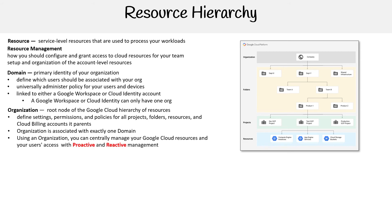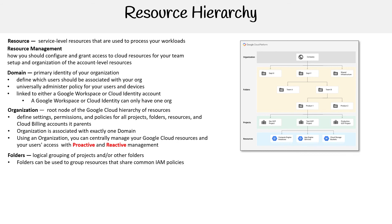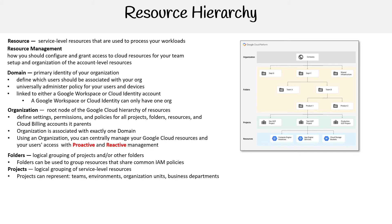Using an organization, you can essentially manage your Google Cloud resources and user access with proactive and reactive management. Then you have folders — a logical grouping of projects and other folders. Folders can be used to group resources that share common IAM policies. You also have projects, which are a logical grouping of service-level resources. Projects can represent teams, environments, organizational units, or business departments, and this is basically where resource hierarchy gets very detailed in its variants.